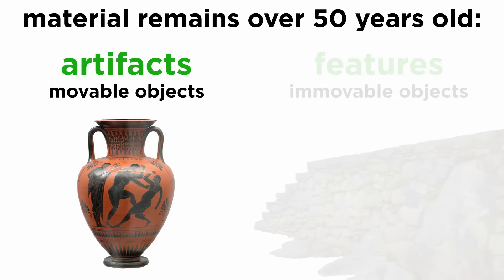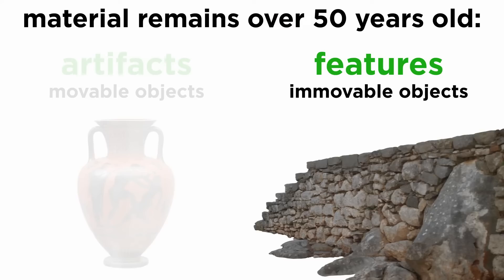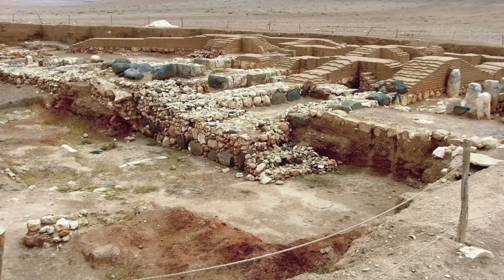We just spent a few tutorials examining artifacts, so let's move on to features. A feature in archaeology refers to immovable objects, such as the remains of houses, walls, or pyramids. Knowing how to identify a feature in an excavation is critical in interpreting and recording a site.